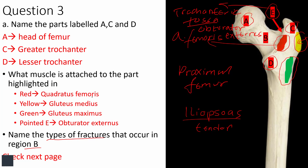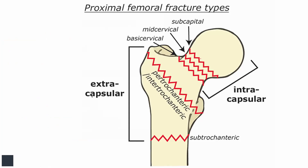There are three major types of femoral neck fractures. One occurs just at the base of the head — the subcapital fracture. Another occurs at the mid-neck level — the mid-cervical fracture. One occurs at the base of the neck — the basicervical fracture. These fractures are intracapsular — within the capsule of the hip joint. The blood supply to the head of femur comes from the retinacular arteries via the trochanteric anastomosis near the trochanteric fossa.